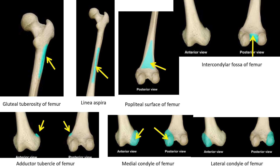Looking at the lower end of the femur anteriorly, there is a little elevation called the adductor tubercle — a point of attachment for muscles that move the thigh medially inwards. It can be seen both anteriorly and posteriorly.